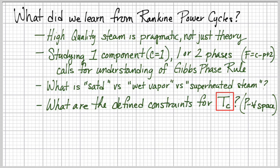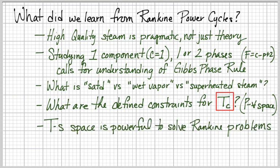We have also defined the constraints for the critical point at the critical temperature in pressure-volume space, and that goes back to the partial derivatives and the second partial derivatives of pressure and volume being equal to zero by definition. That is the critical point. We have found out that temperature-entropy space, the plots of temperature and entropy, is a powerful tool to solve Rankine problems. Even though we're solving for enthalpy at the end, because we can get so much value out of ideal cycles where we have isentropic processes, we can solve those problems faster.